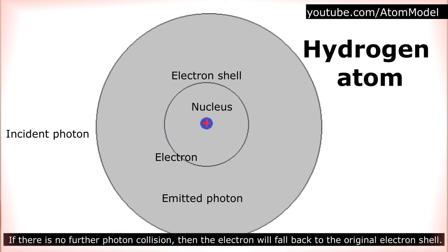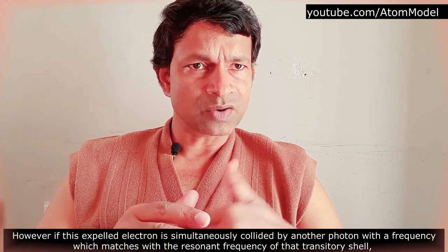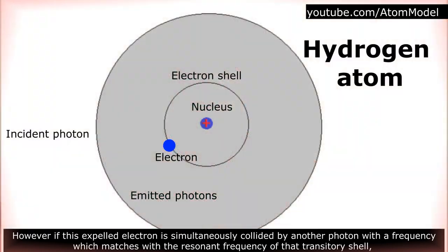If there is no further photon collision, then the electron will fall back to the original electron shell. However, if this expelled electron is simultaneously collided by another photon with a frequency which matches with the resonant frequency of that transitorial shell,